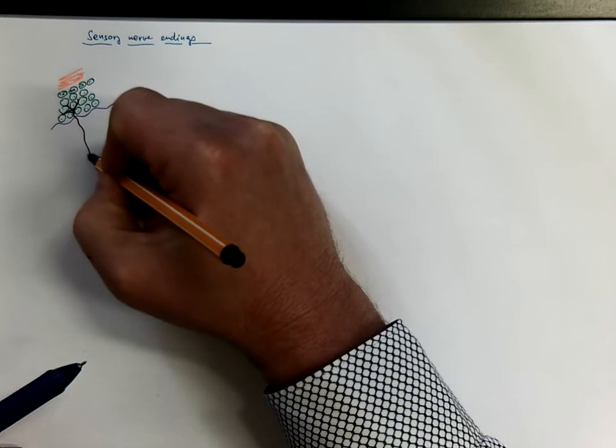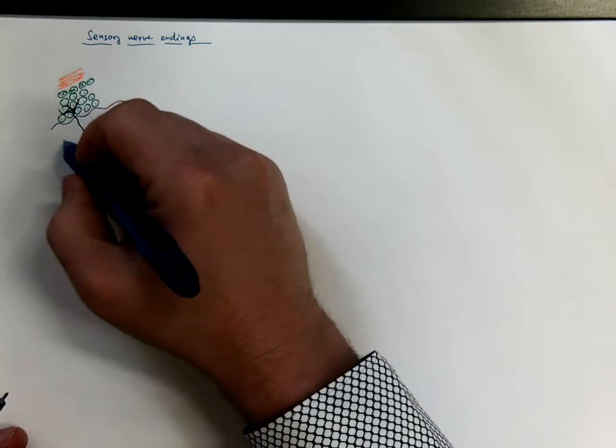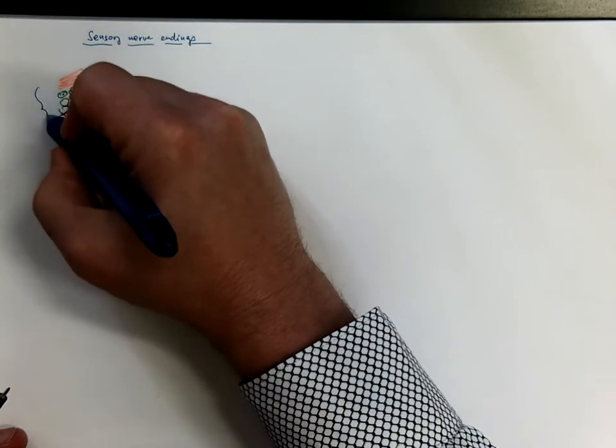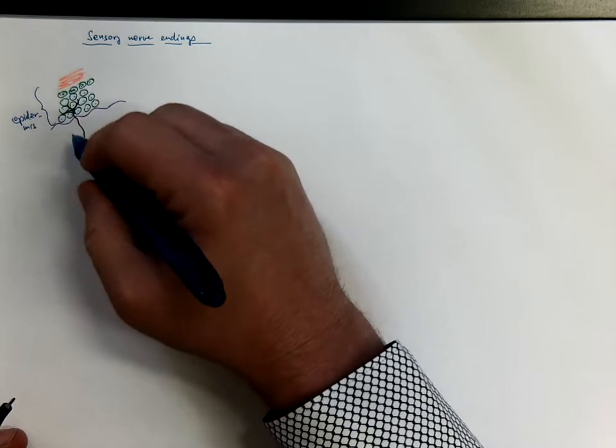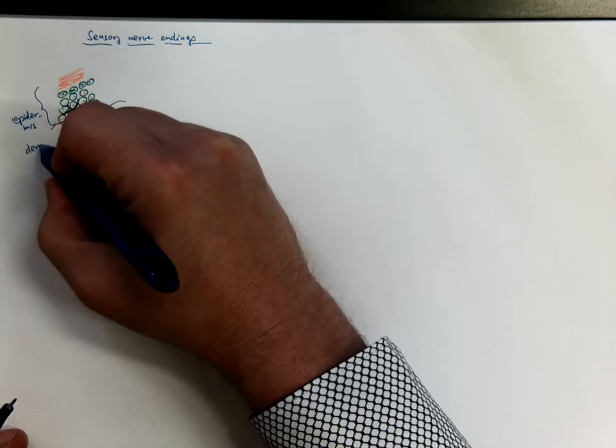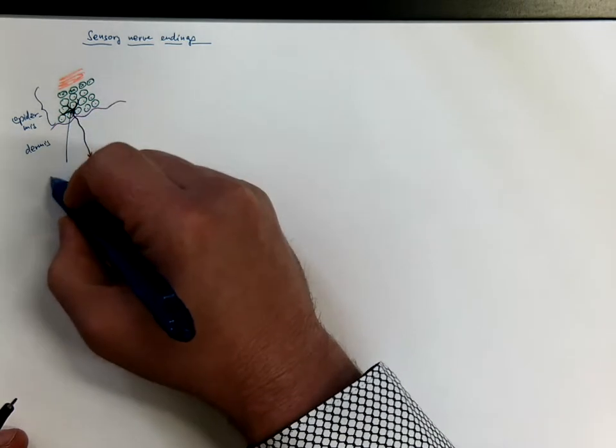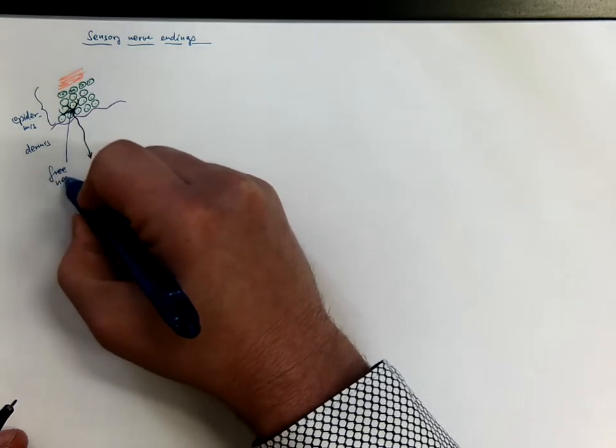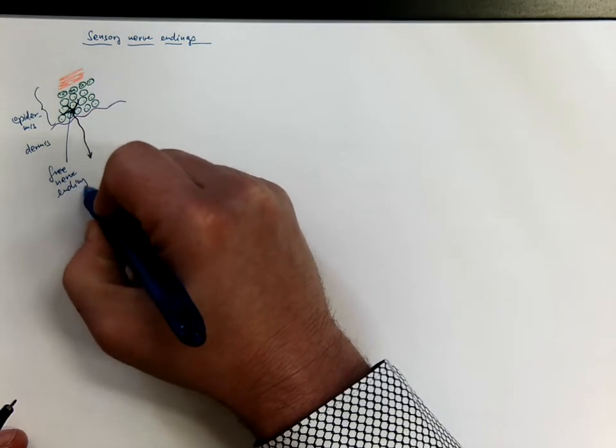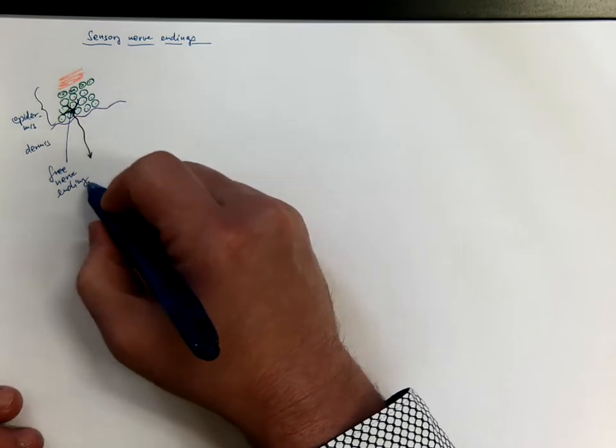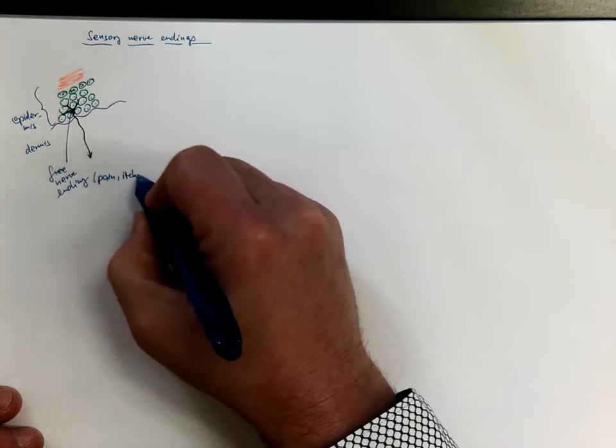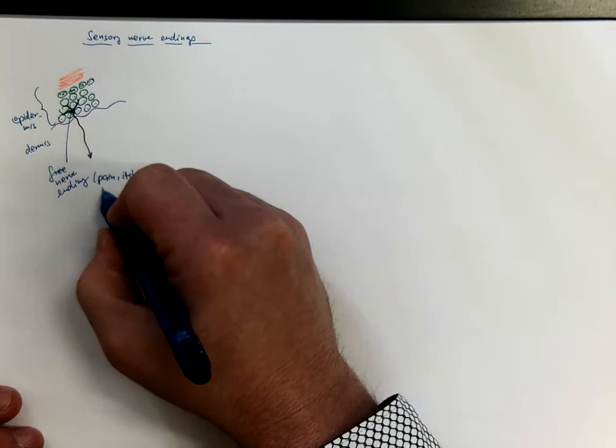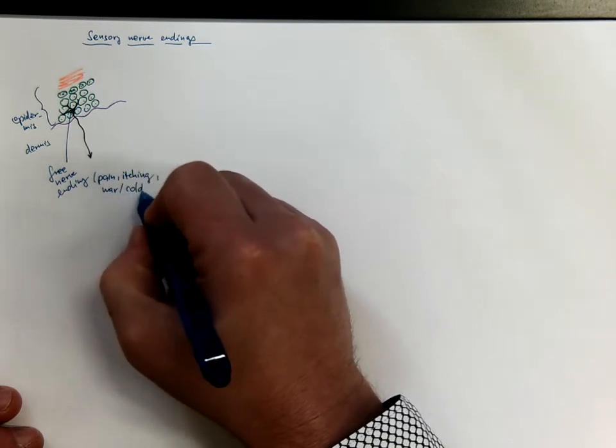And they carry on as a dendrite of a sensory neuron. So this is epidermis. And here will be the dermis of the skin. Then these are the three nerve endings. And they perceive modalities such as pain, itching, and partially also the warm and cold sensation.